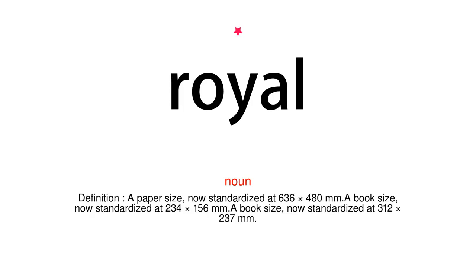Noun. Definition: A paper size, now standardized at 636 x 480 mm. A book size, now standardized at 234 x 156 mm, or 312 x 237 mm.